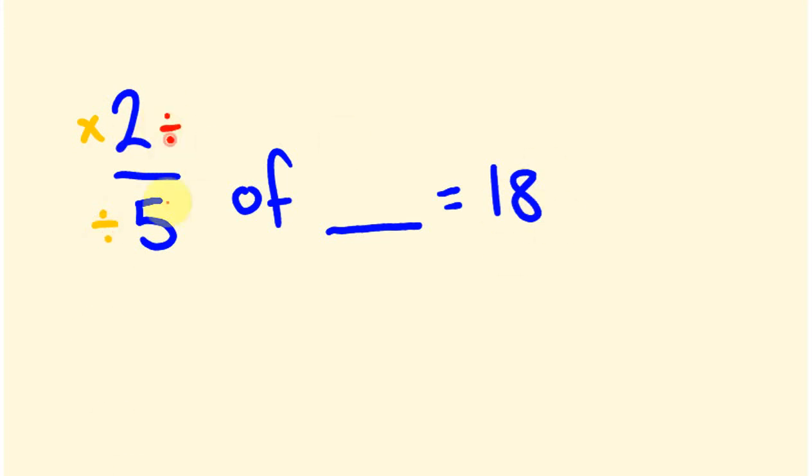We're going to be dividing by 2 and timesing by 5. 18 divided by 2 is 9, times 5, 9 fives are 45. 2 fifths of 45 is 18. Correct answer too.